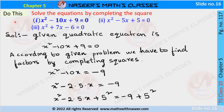Now we are going to solve page number 117, chapter 5. In this problem, we solve the equations by completing the square method. There are three problems given in total, so first we solve the first problem.